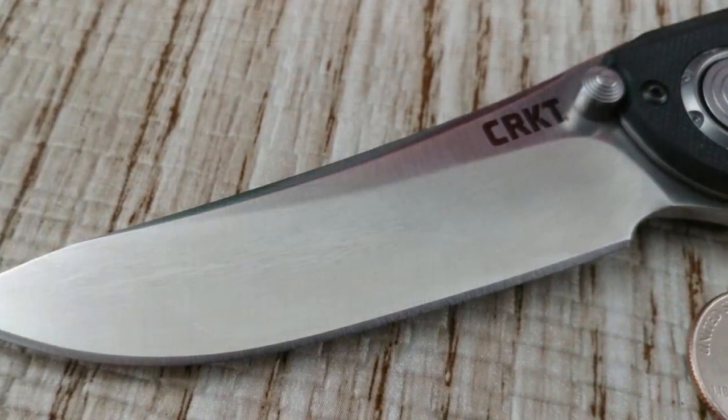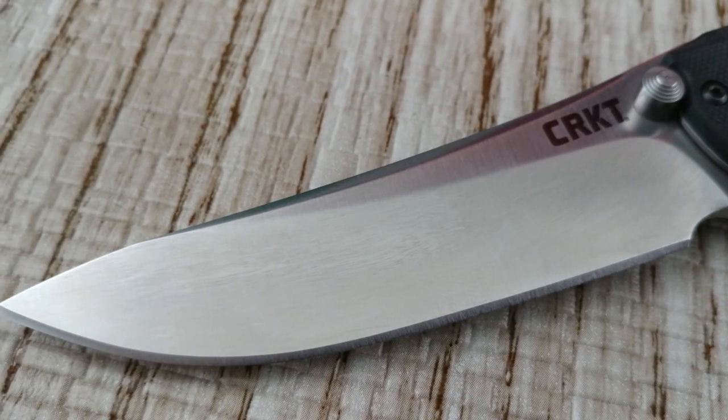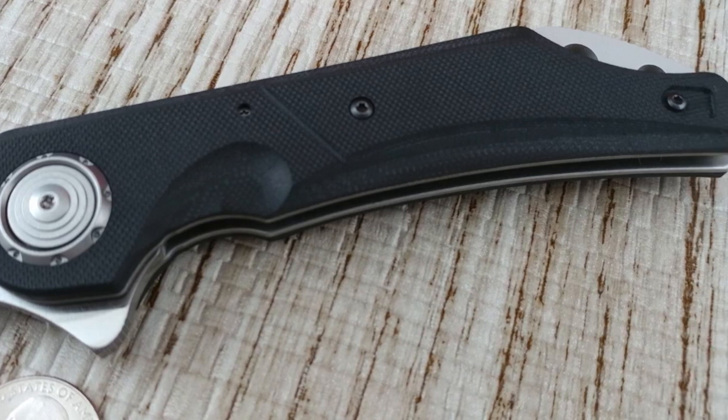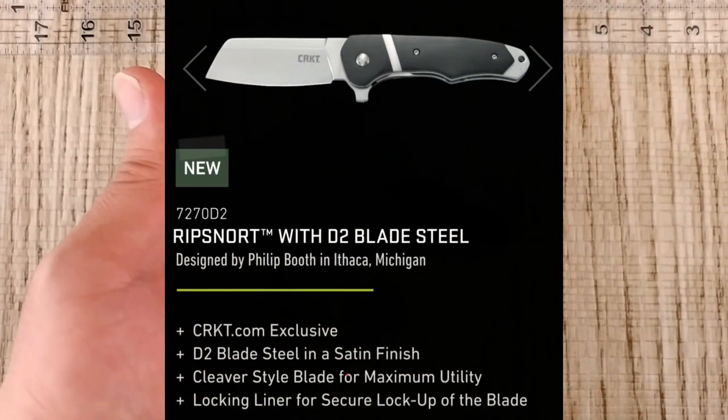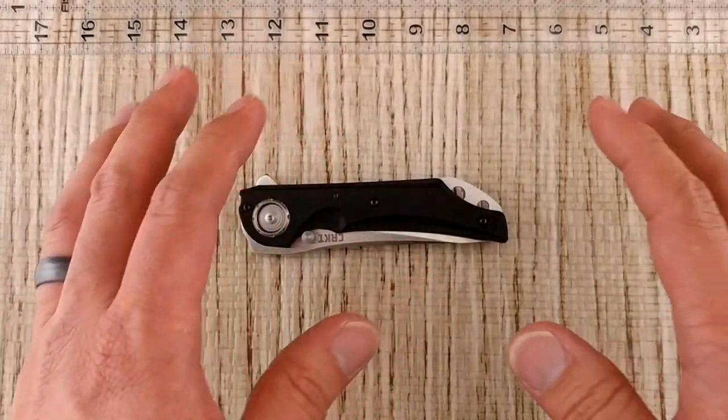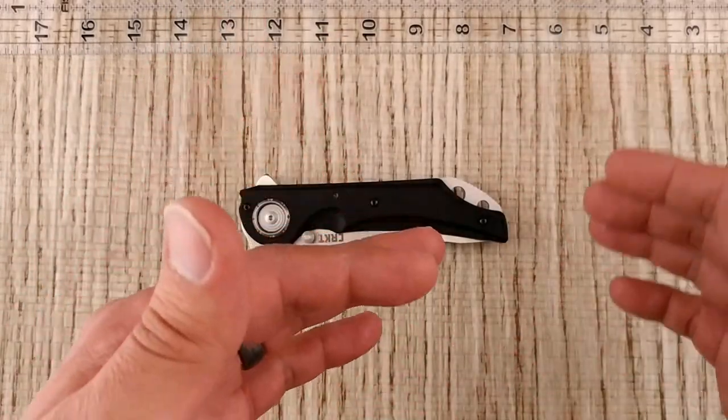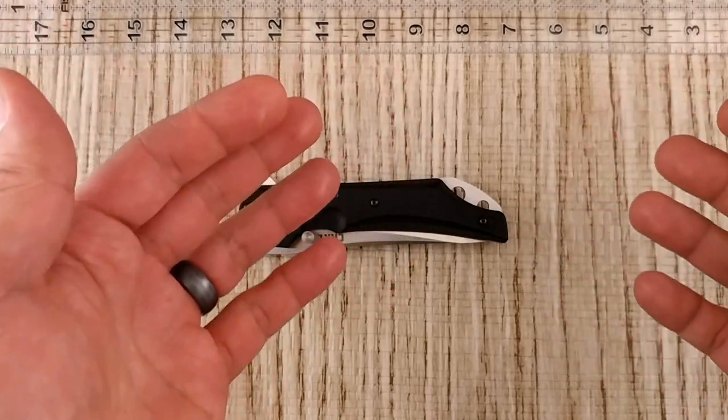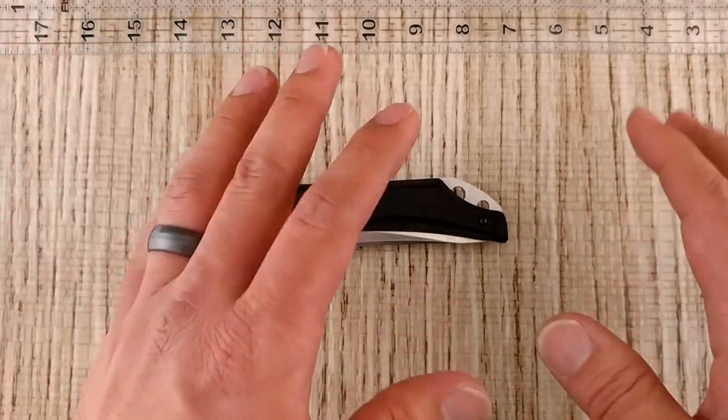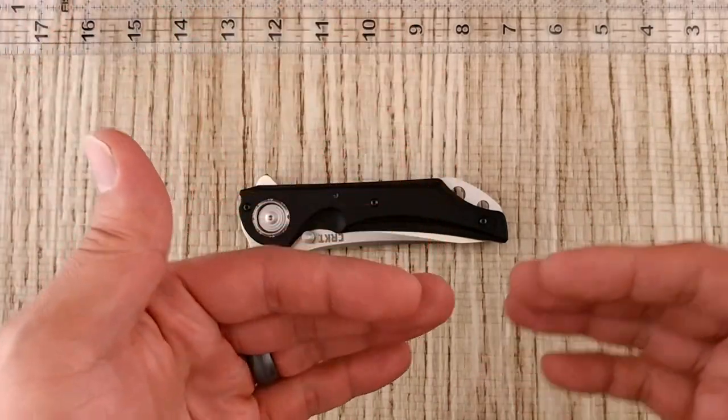Thank you to CRKT Columbia River Knife and Tool for providing this knife. Some news: The Rip Snort is available in D2, $79.99 exclusive to CRKT.com. They're bringing out some of these in better steels other than 8CR13, so check it out and support it so they will continue to bring it out.